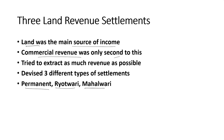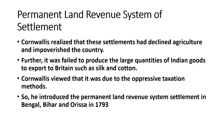All these systems of settlement were introduced by the British to get as much revenue as possible, since this territorial revenue — income from land — was the main source of the English East India Company. First of all, let us look at the Permanent Land Revenue System of Settlement, and make a quick recap of the revenue settlements already in existence in Bengal.